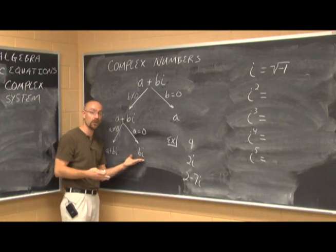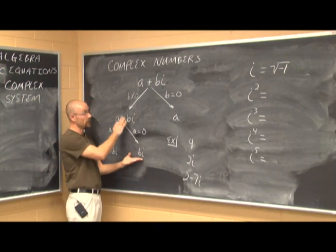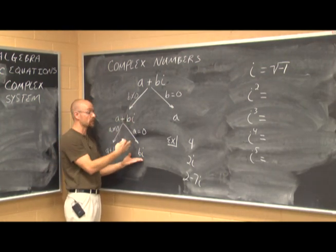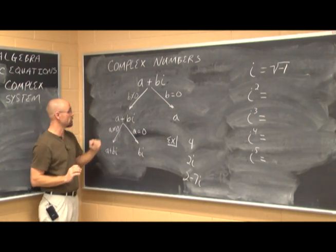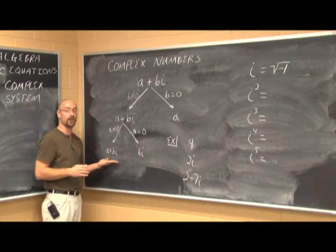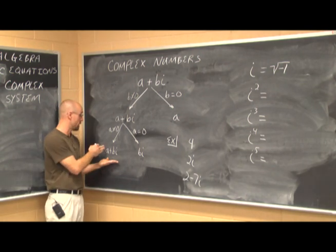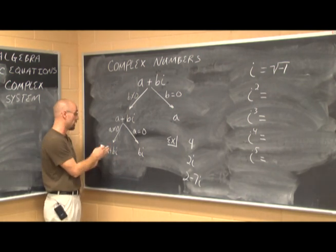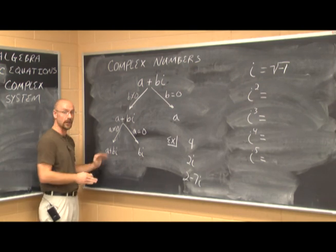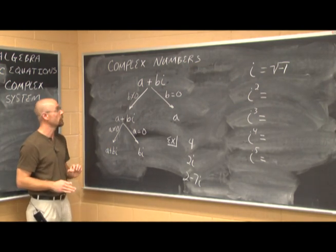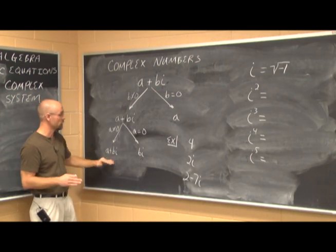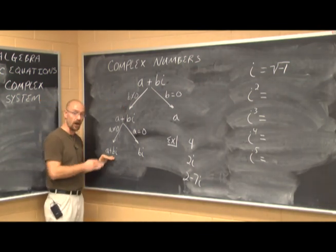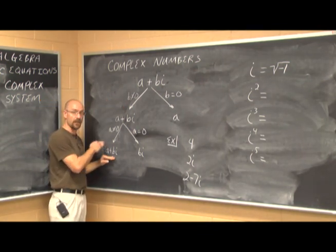If a is something other than 0, we have the complex number a plus bi — with both a real part and an imaginary part. If neither a nor b are 0, it's always written in the form a plus bi.